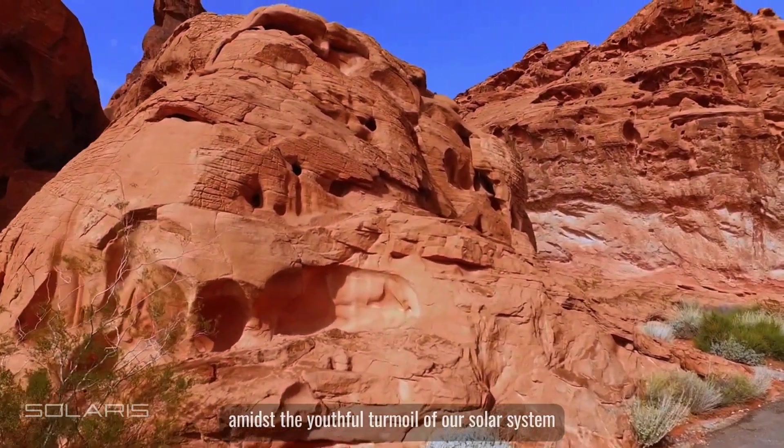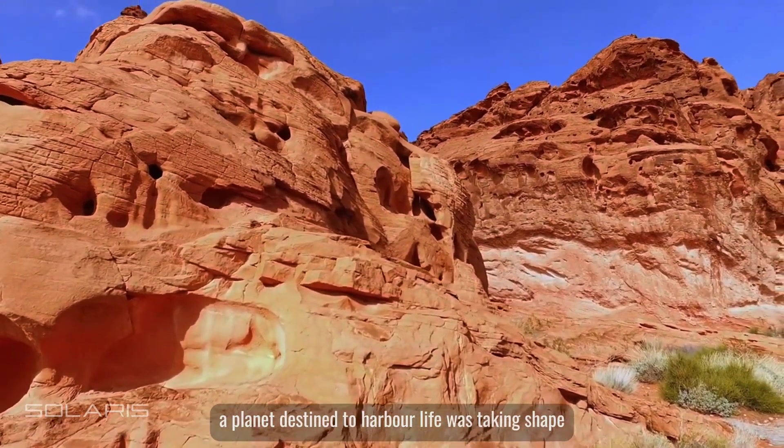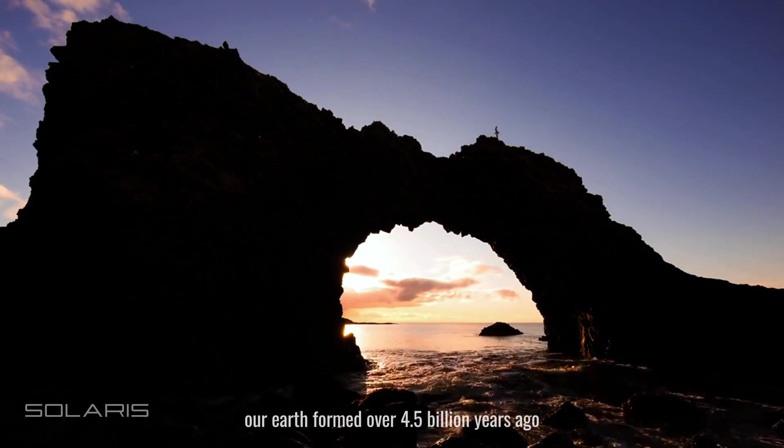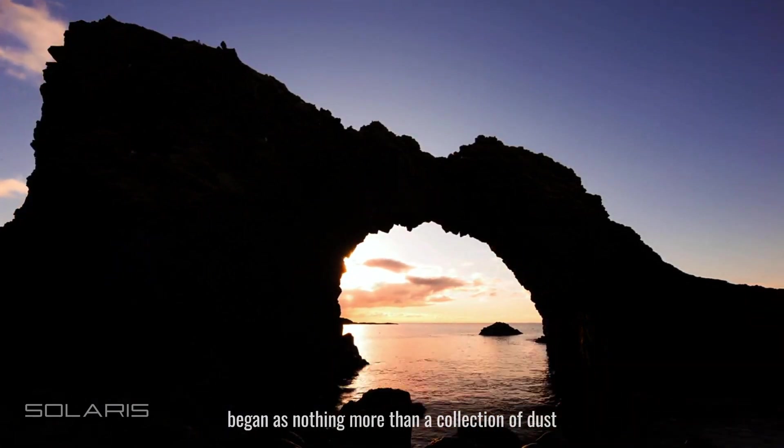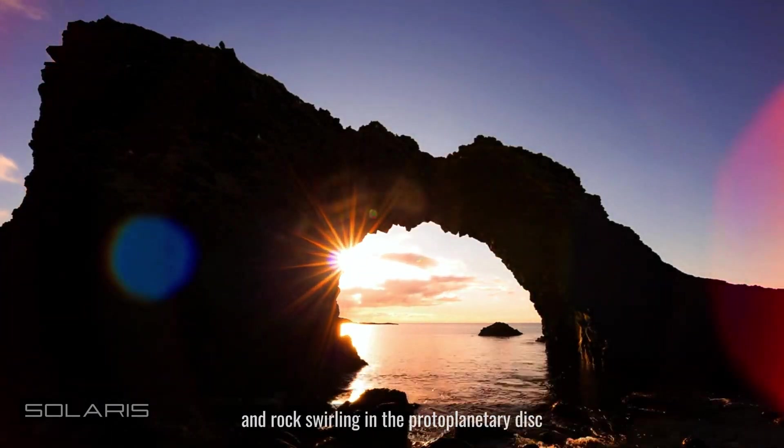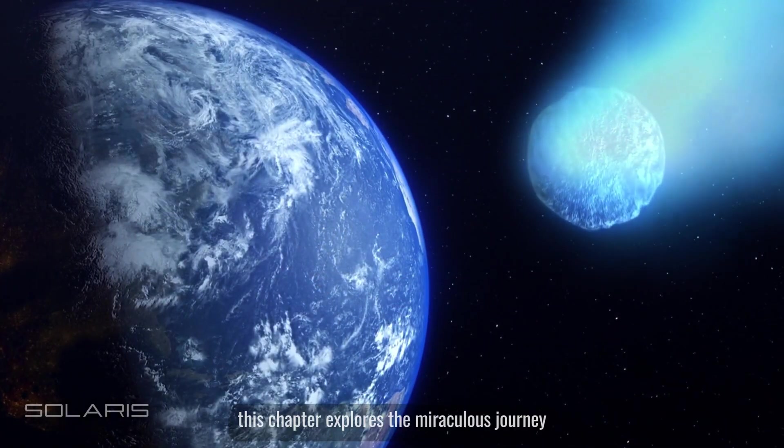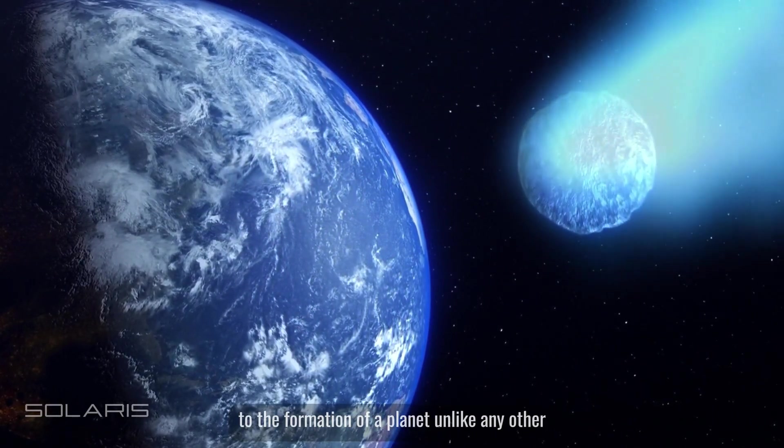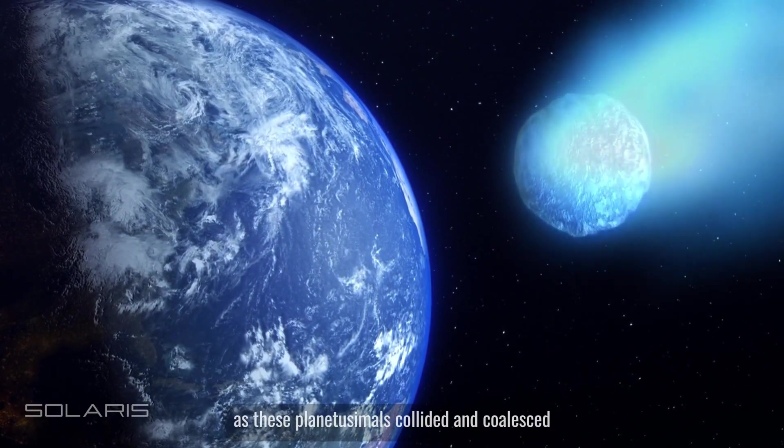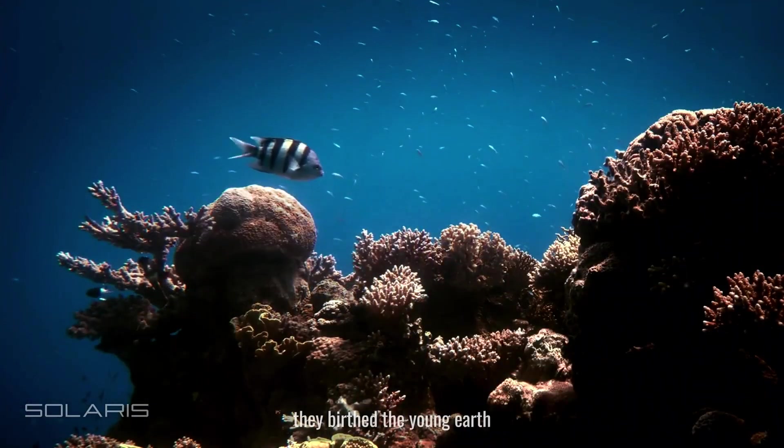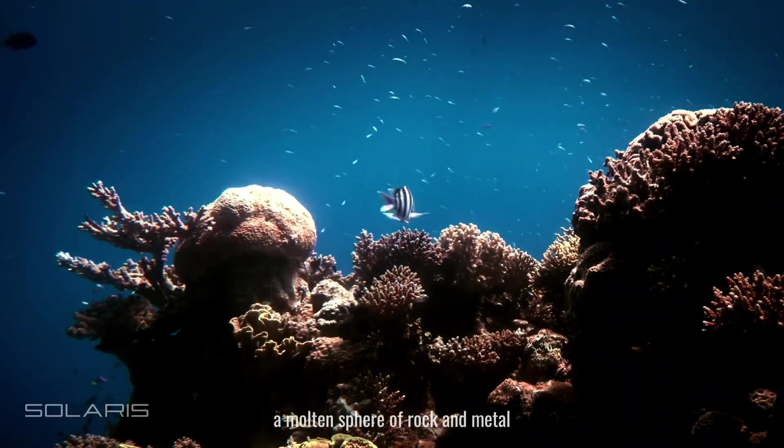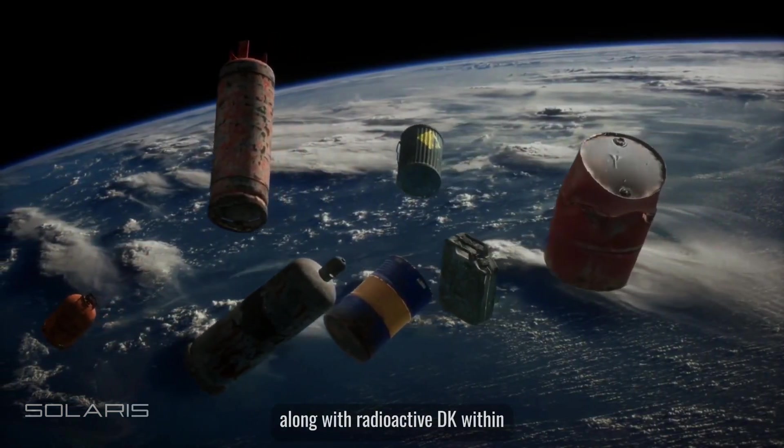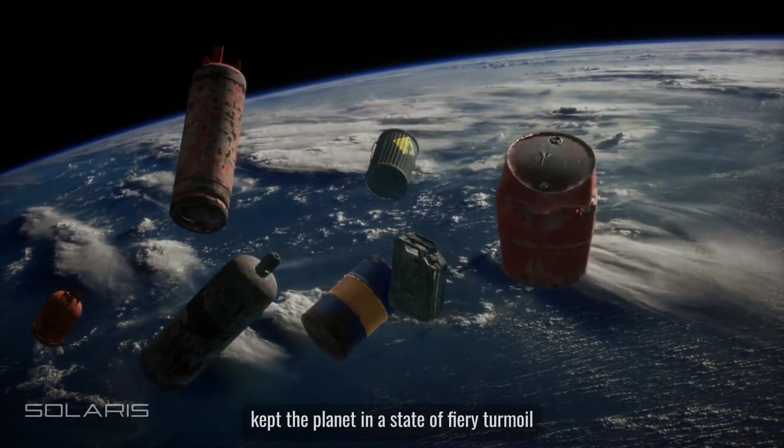Amidst the youthful turmoil of our solar system, a planet destined to harbor life was taking shape. Our Earth, formed over 4.5 billion years ago, began as nothing more than a collection of dust and rock swirling in the protoplanetary disk. As these planetesimals collided and coalesced, they birthed the young Earth, a molten sphere of rock and metal. The heat generated by these impacts, along with radioactive decay within, kept the planet in a state of fiery turmoil. It was within this crucible that the foundation for our planet's diverse geology was laid.